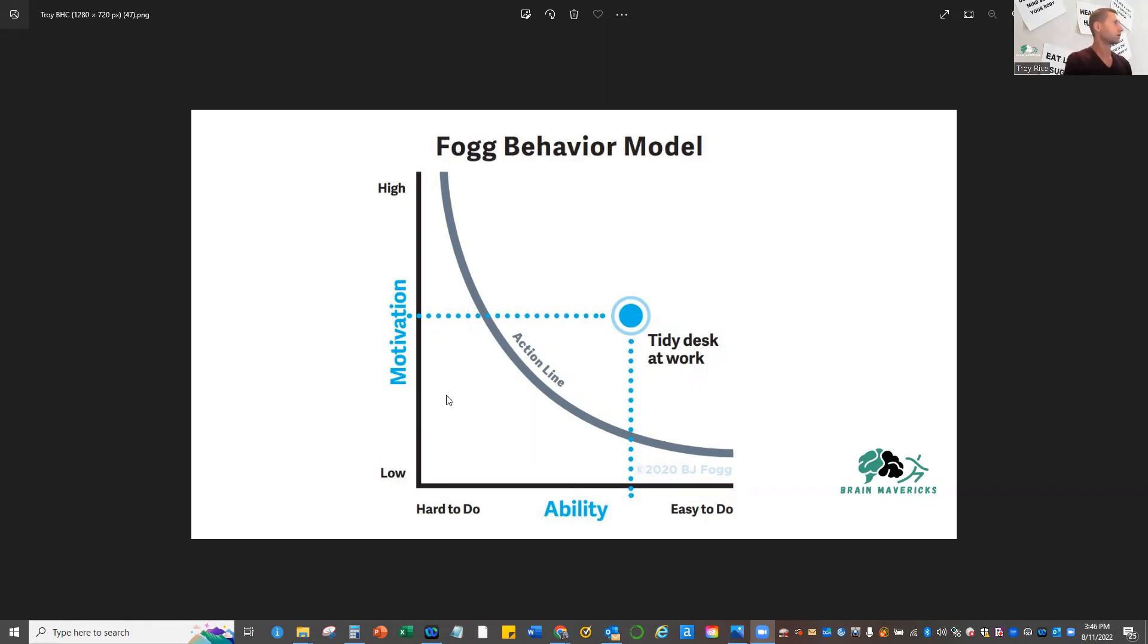This is the curve. If you have motivation and ability down the side, usually at the intersection of motivation, ability, and then what we'll get to is the prompt, is where the change starts to happen.